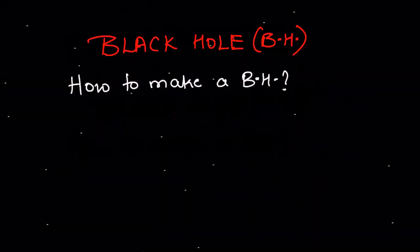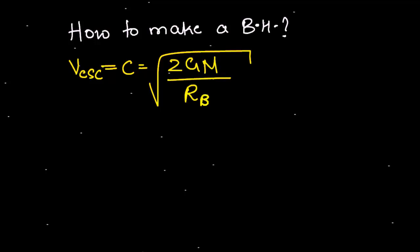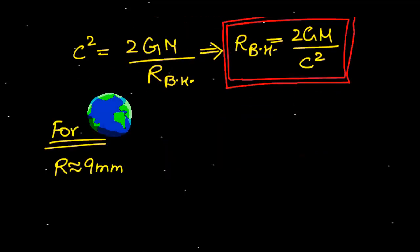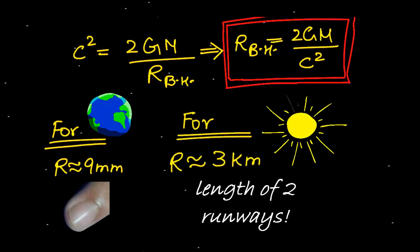So by making v escape equal c, you can easily calculate how small earth should be to become a black hole. If you plug in, you get about 9 millimeters. Or you have to shrink sun to about 3 kilometers, which is also not possible.